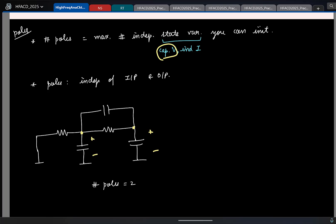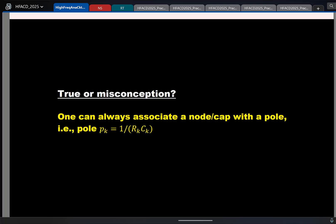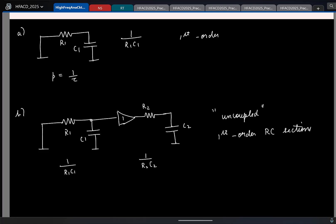And another key point was in general, you cannot associate a node or a capacitor to a pole. That is, you cannot always write a pole location to be 1 by resistance times the capacitance at that node. You can do it under some conditions which are the following.